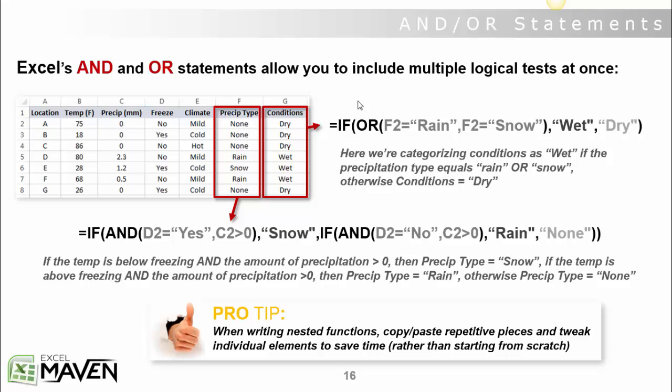So we could say if precipitation type is rain, then wet. If precipitation type is snow, then wet. Otherwise dry and do it like a traditional nested if. Or we can get a little bit more elegant and introduce an or statement to do the same thing. In this or statement, we're saying if or, and then listing our two conditions.